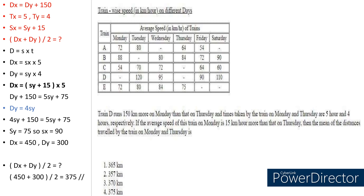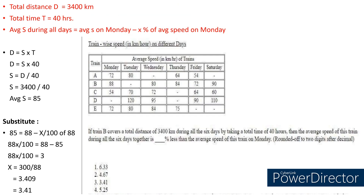If we know SY, we know SX — from the third equation SX is 15 km per hour more than SY, so 75 plus 15 equals 90. Substituting back into the distance formula, the distance traveled by Train D on Monday is 450 and on Thursday is 300. They are asking the mean, so add them and divide by 2. We get 375 kilometers. It might sound a little complicated while explaining this way, but when you start solving in the exam you don't need to write each step. Once you get used to it, you can easily solve these questions in less time.